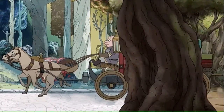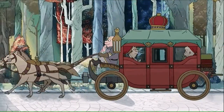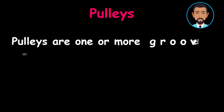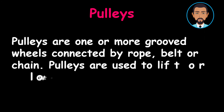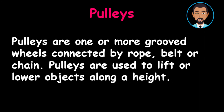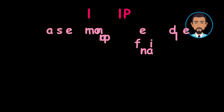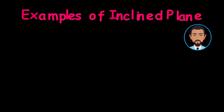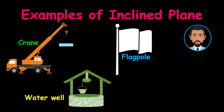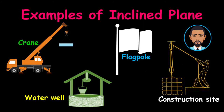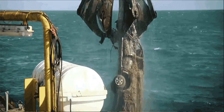Now it's time for our last group of simple machines. Pulleys are very useful. A pulley is defined as one or more grooved wheels connected by rope, belt, or chain. Pulleys are used to lift or lower objects along a height. Some examples of pulleys can be seen on cranes, water wells, flagpoles, and on construction sites. That's a pulley system at work. So powerful.